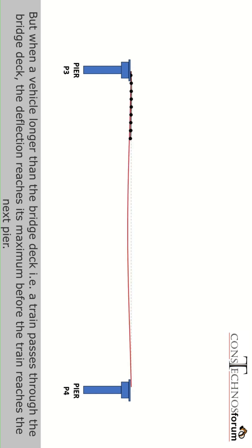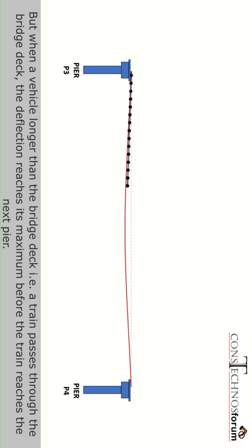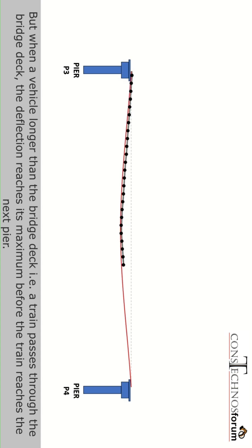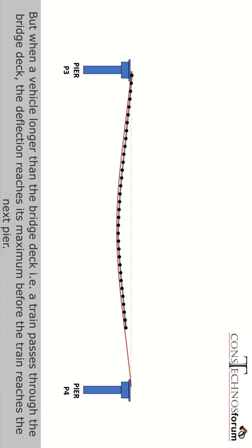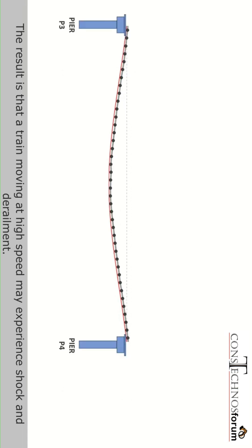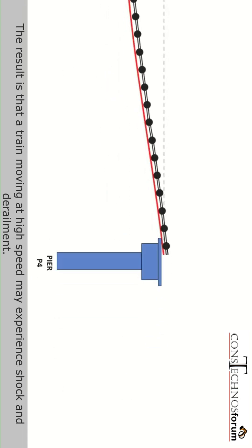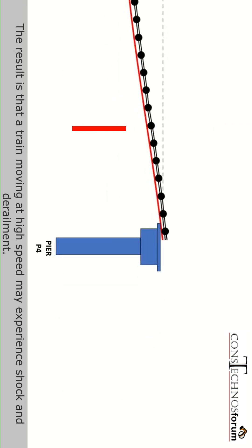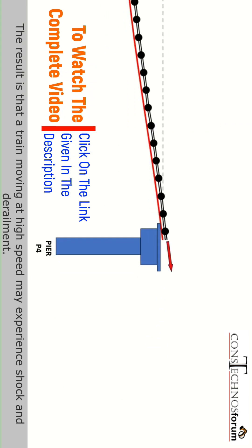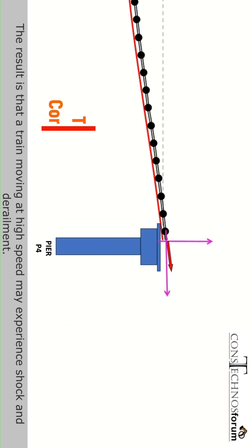But when a vehicle longer than the length of the bridge deck — that is, a train — passes through, the deflection reaches its maximum before the train reaches the next pier. The result is that a train moving at high speed may experience shock and derailment.